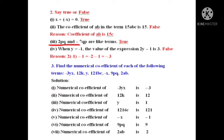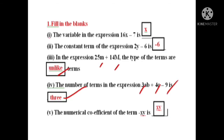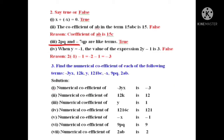2PQ and minus 7QP are given as like terms. Is this correct? Before this we saw a problem where small M and capital M were different, so they were unlike terms. But here PQ and QP are the same, because in multiplication 2 into 3 equals 3 into 2. So both are like terms. Answer: true.